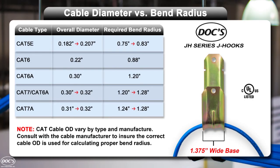In general, as cable has gone from Category 5 to 7 to accommodate higher speed data transmission, the minimum bend radius required to maintain cable geometry has increased. For instance, the minimum bend radius of a CAT-6A cable with an outer diameter of 0.3 inches should have a minimum bend radius of 1.2 inches.